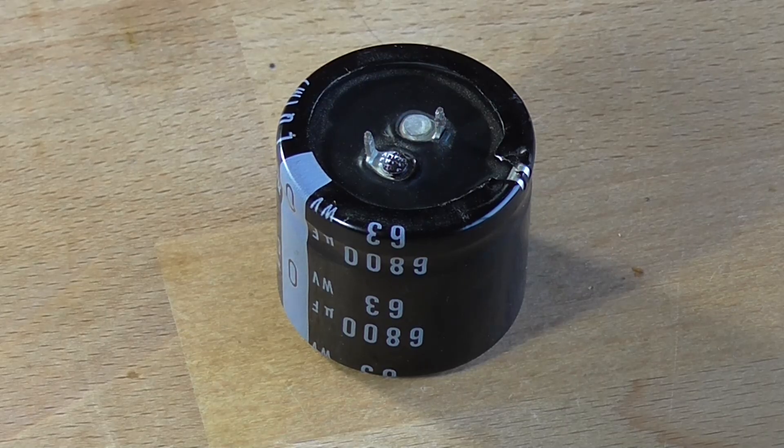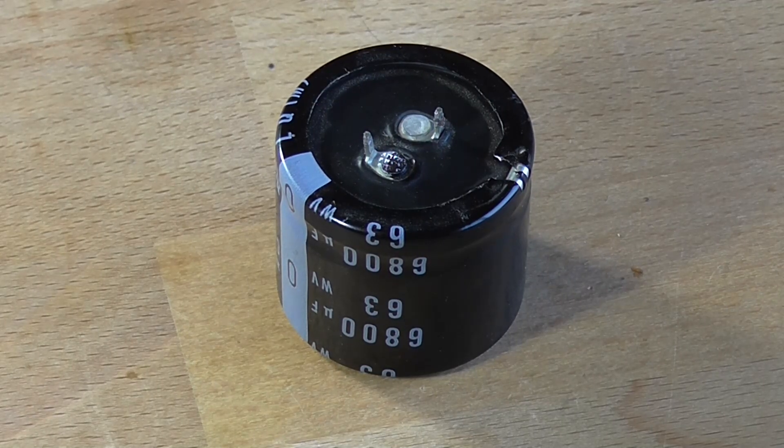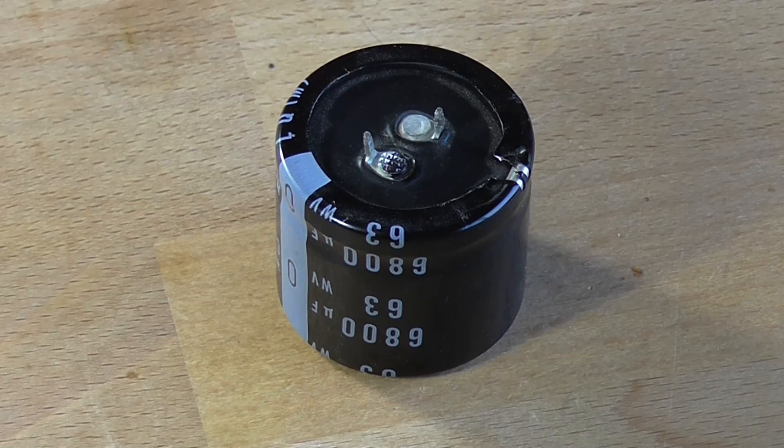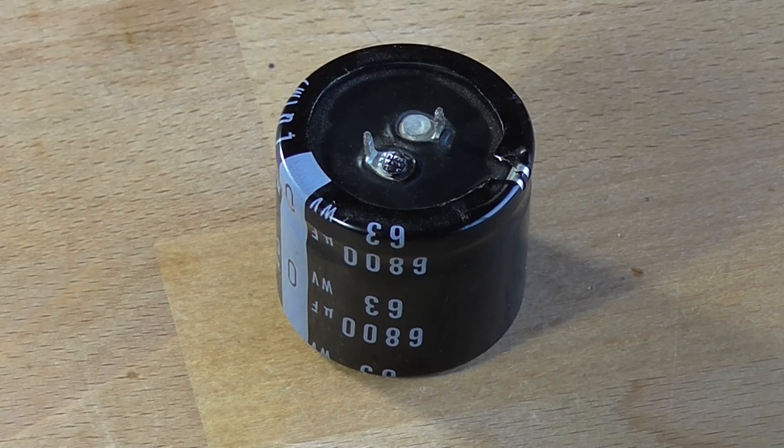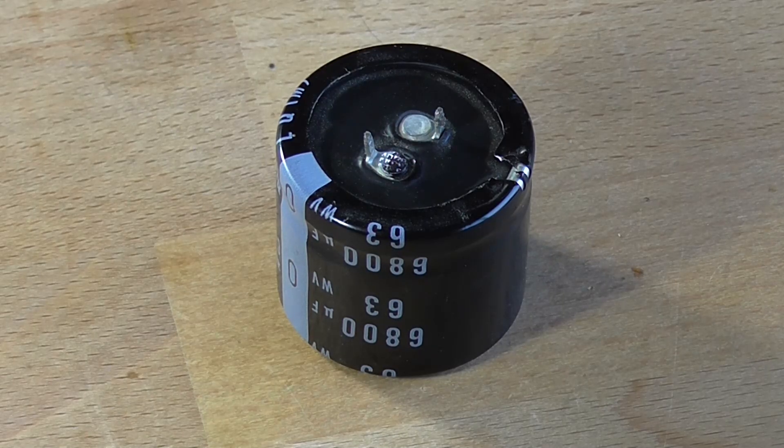And these can capacitors, which are known as snap capacitors, can actually go off with quite a loud pop and they make a serious mess of the PCB by the shrapnel and all the internal juices leaking all over the PCB. It's a nasty mess to clean up.